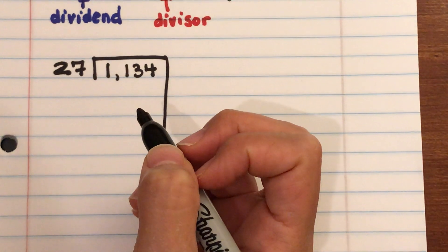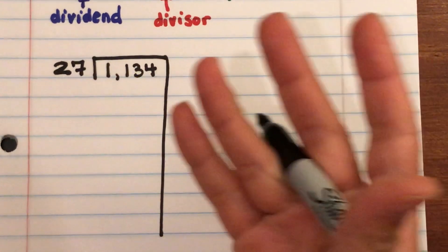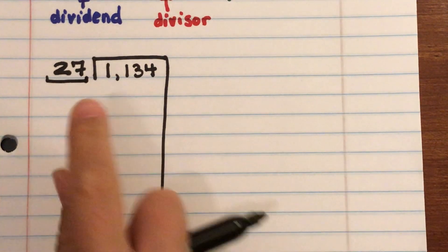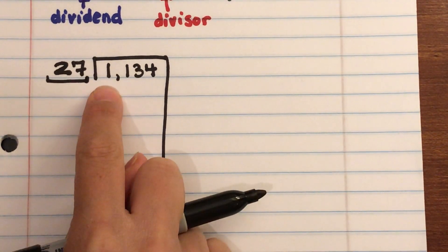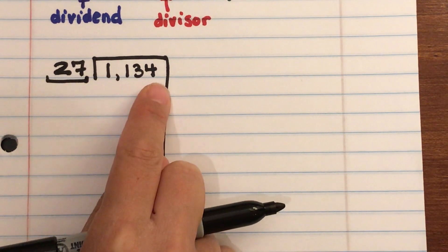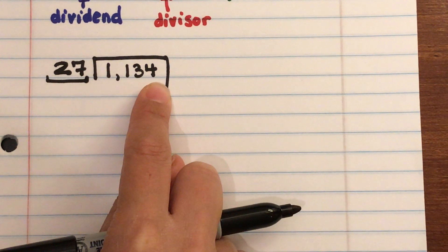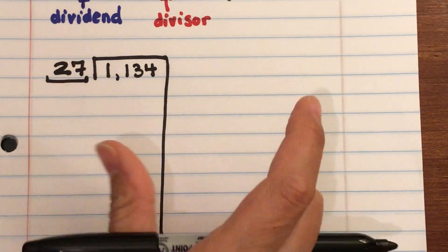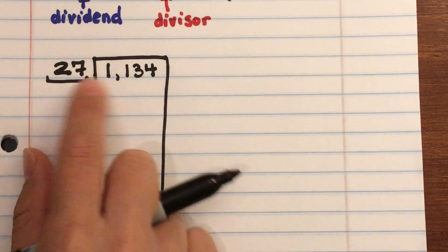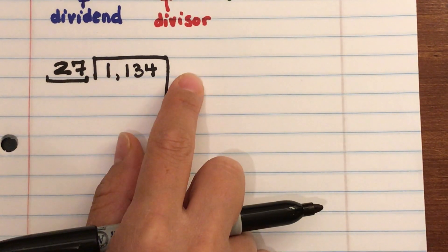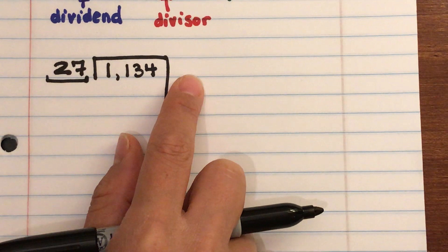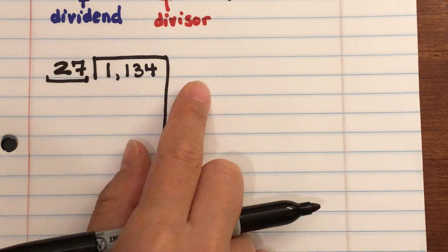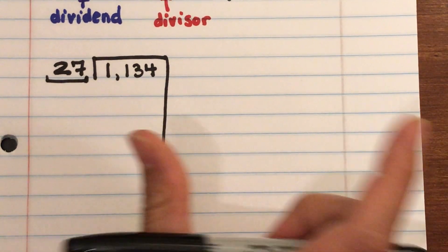Using partial quotients, you use multiples of tens or easy numbers to multiply in your head. We have 1,134 ÷ 27, and we want to know how many times 27 can go into 1,134. Start by trying a power of 10. 10 × 27 = 270 — too small. Let's try 100: 27 × 100 = 2,700 — too big.